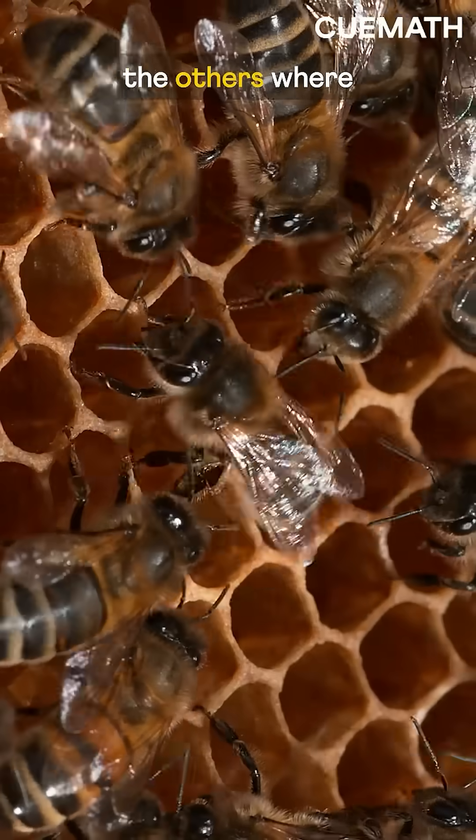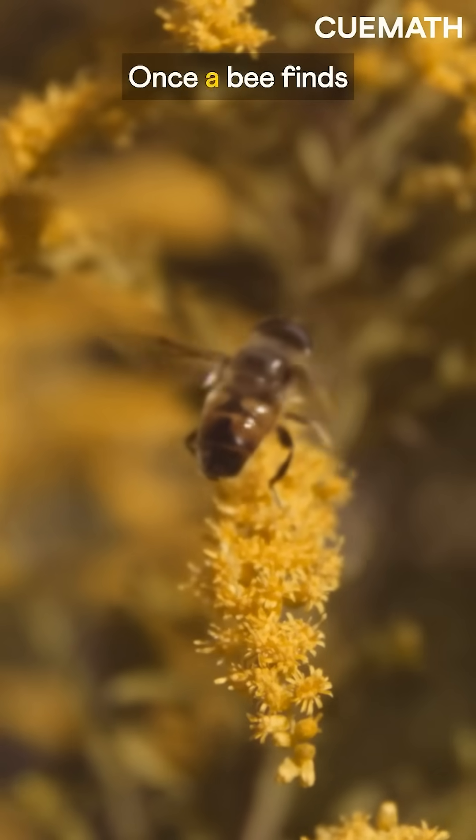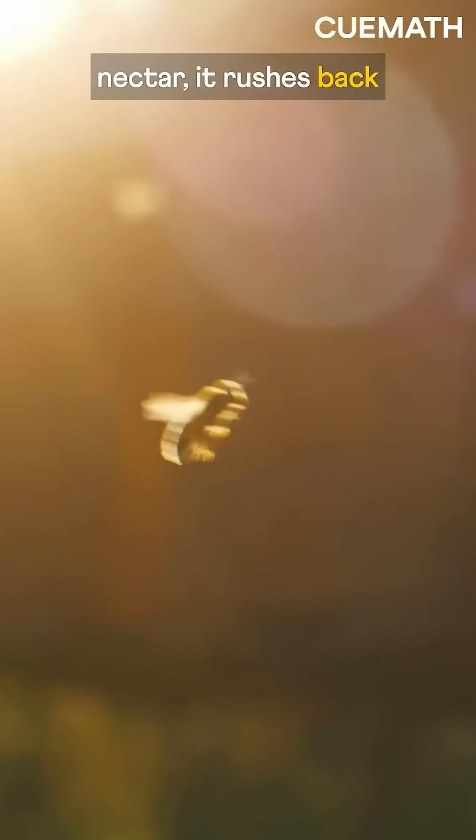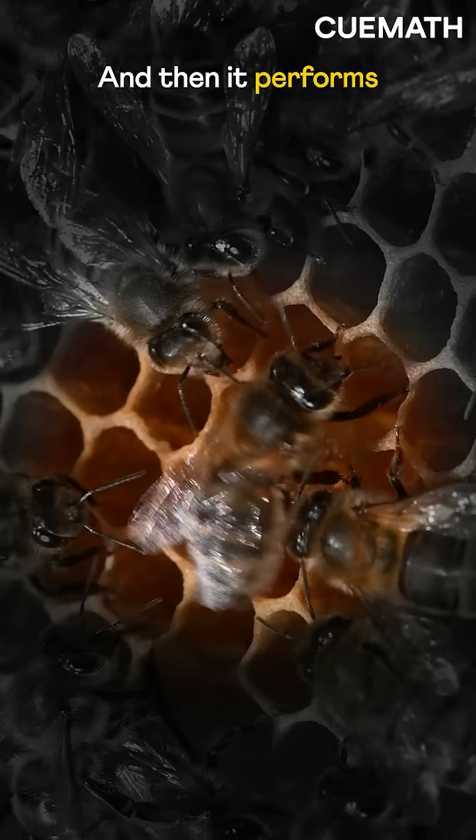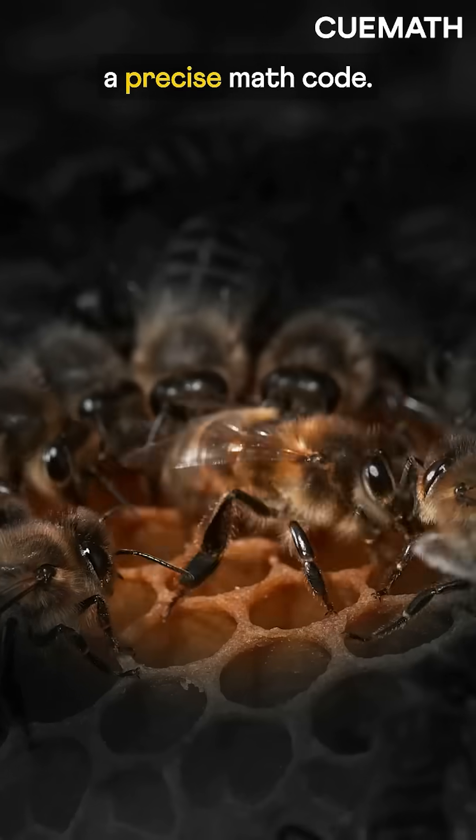With this dance, the bee tells the others where to find food. Once a bee finds nectar, it rushes back to the hive and then it performs the waggle dance, a precise math code.